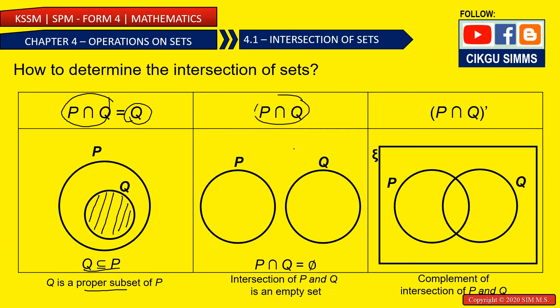How about this one? P and Q is a null set, which means it's an empty set. This means that there is no intersection. There's no elements.